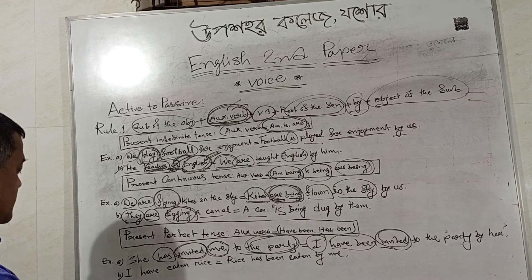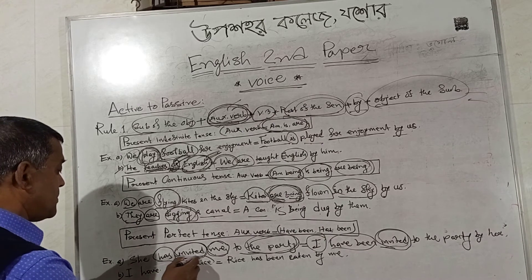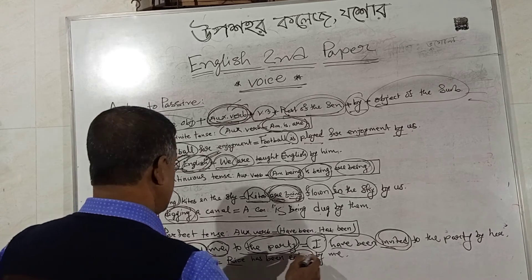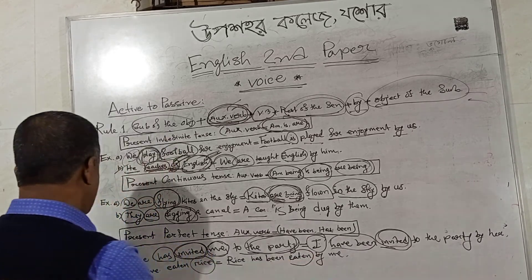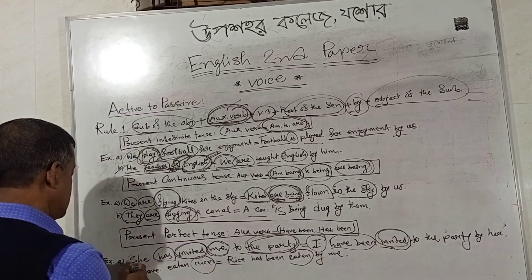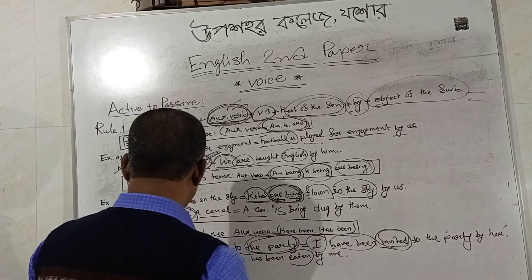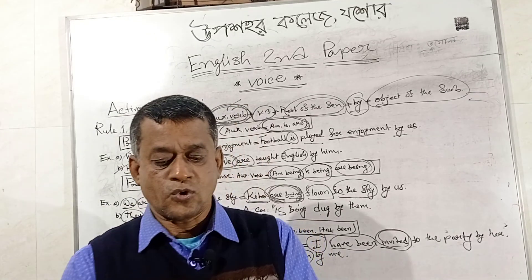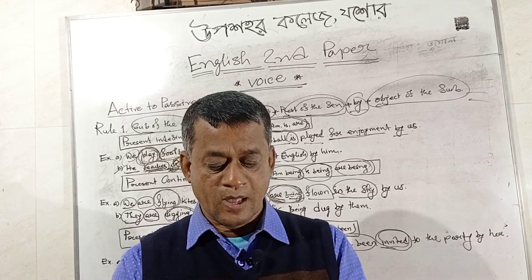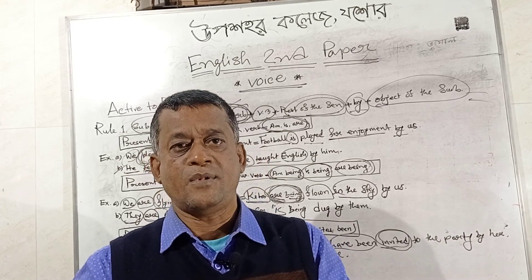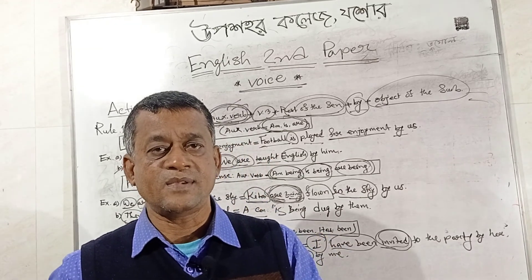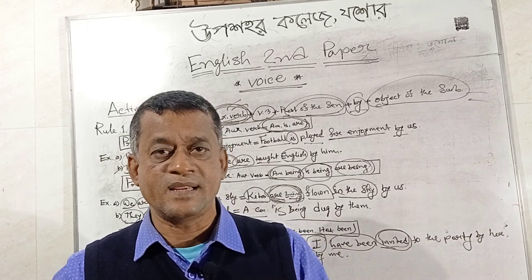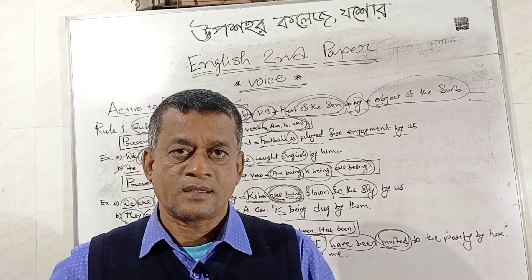The last example: 'I have eaten rice.' The object is 'rice'. Then 'has been', then V3 'eaten', then 'by me' — the object of 'I' is 'me'. The answer: 'Rice has been eaten by me.' I think you have got some idea about how we can transfer active into passive. That is all from today's class. We will meet next time. Thank you.